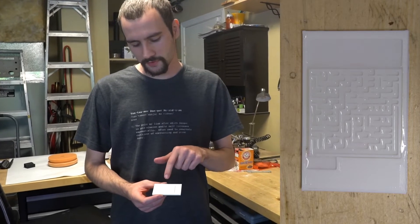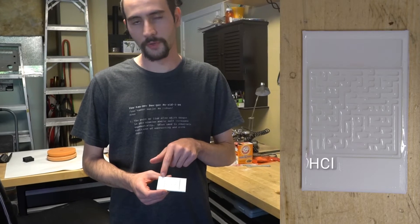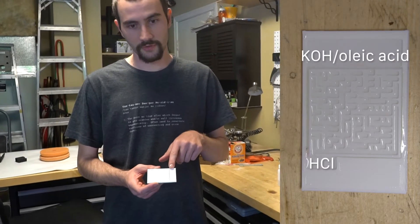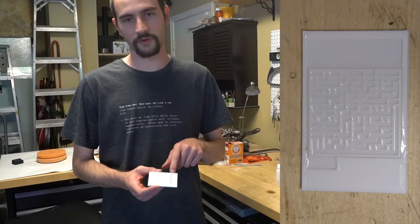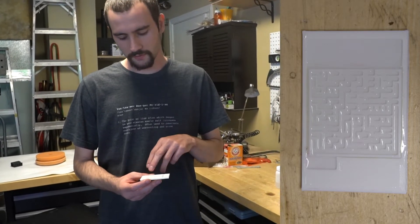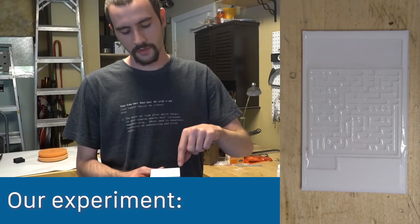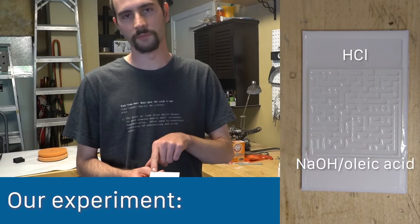Originally you're supposed to do this experiment by putting hydrochloric acid sponge in the small side of the maze and oleic acid potassium hydroxide solution in the other side of the maze. We have actually used sodium hydroxide as opposed to potassium hydroxide and it works just fine. So we have done it by flipping it around and done HCl in the big side and sodium hydroxide in the small side.